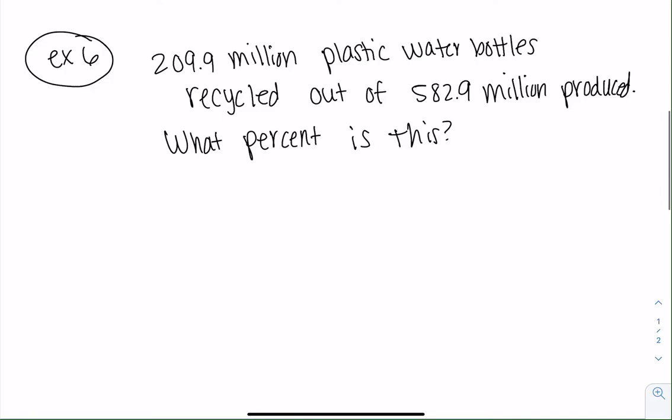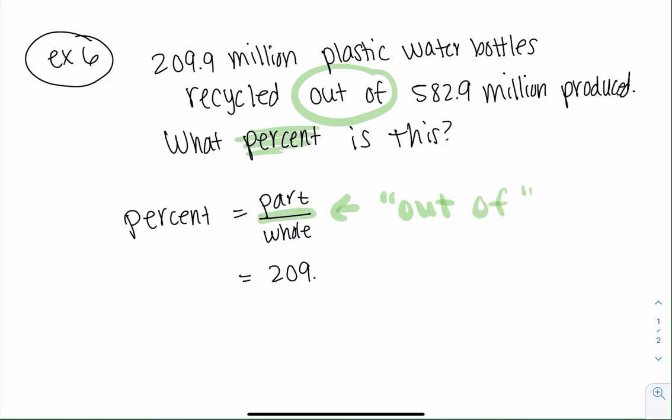So let's figure out what's going on. In this case, we want to figure out the percent. So that's when I like the division formula, because the percent is just the part out of the whole. So out of is another hint, right? Sometimes we read division as out of. So the part would be the amount recycled. So we'll take the 209.9 million.